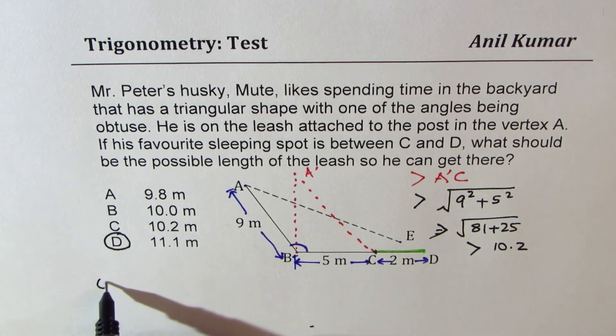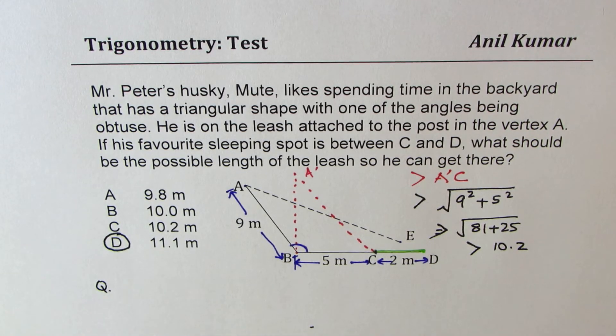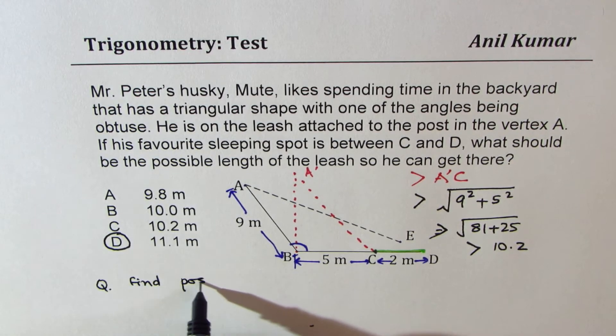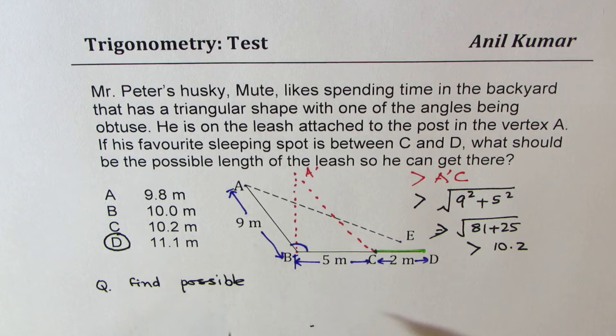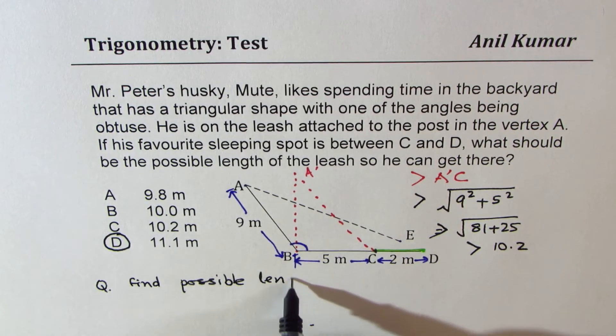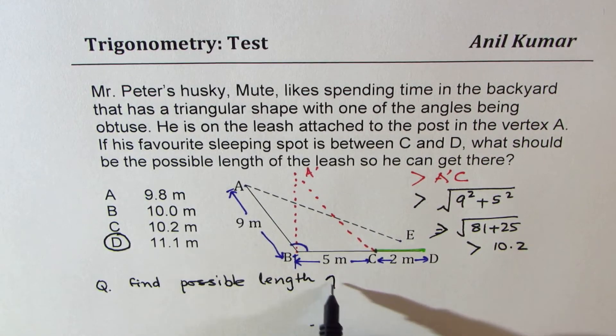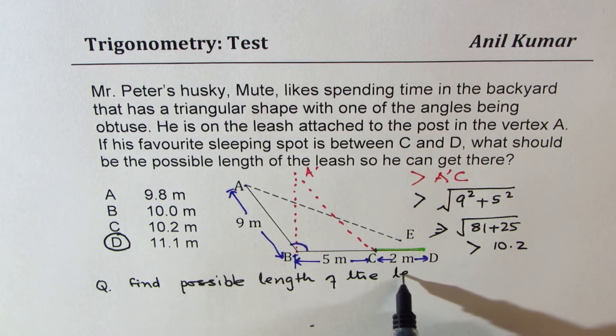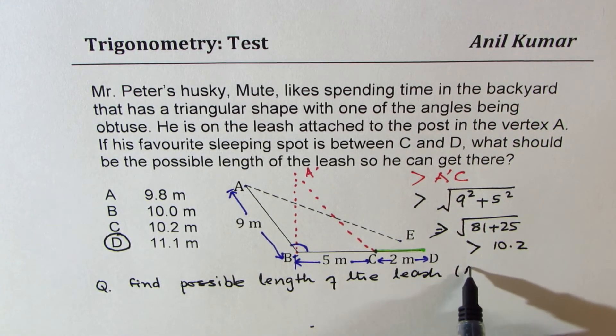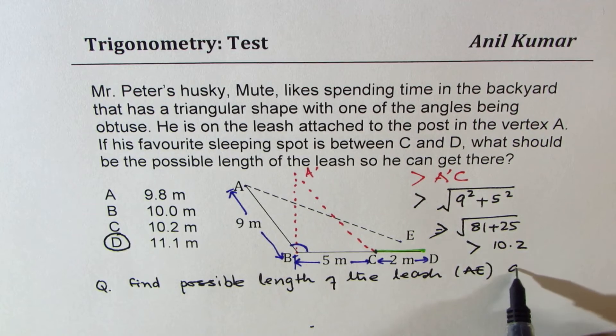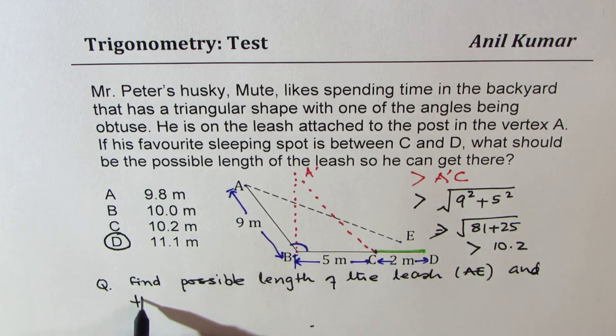Now here comes the real question for you. You can take this as an open question and then find possible length of the leash, which is AE, right?